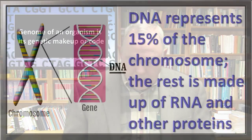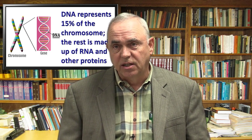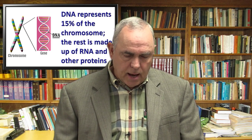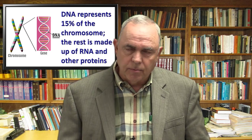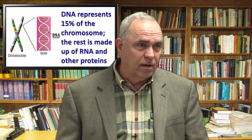DNA represents only about 15% of the chromosome. There's a lot more to the chromosome than just DNA, but the DNA is the coding part. DNA also has RNA in it and other proteins. The word chromosome actually comes from the word 'dark body' because when they looked at them under a microscope, the chromosomes looked dark. And the number of chromosomes doesn't determine the complexity of the organism.